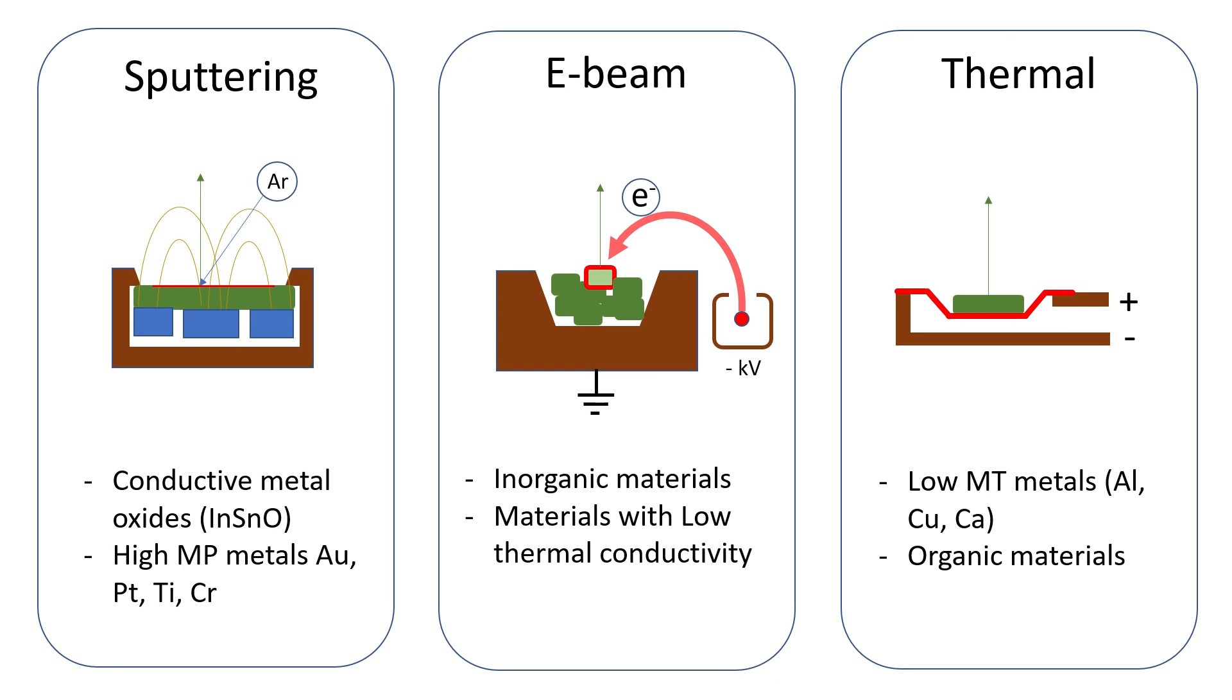There are several methods that can be used for the evaporation of materials, and each method works best for a specific type of material. For example, magnetron sputtering is frequently used to deposit metals or metal oxides with fairly high melting temperatures. But you can also use a technique called E-beam evaporation, which uses an intense beam of highly accelerated electrons to heat up a material locally. This method works really well for materials that have a relatively low thermal conductivity.